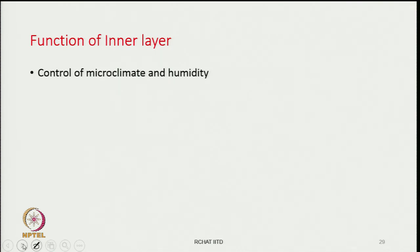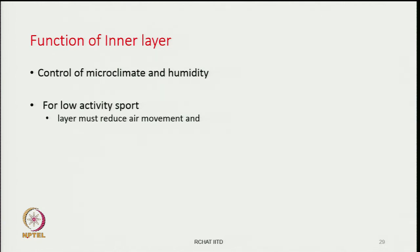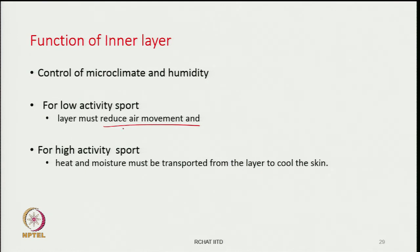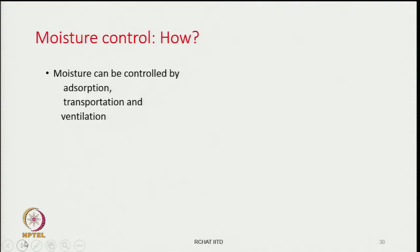The inner layer purpose is climate control — control of humidity and skin temperature. For low-activity sports the inner layer must reduce air movement so that body heat is not lost very fast. But for high-activity sports, heat and moisture must be transported from the layer to cool the skin and not be allowed to accumulate there. The function of the inner layer changes depending upon the level of activity.